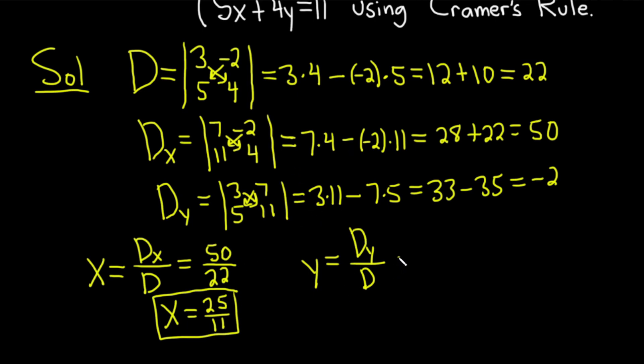And for y, big D sub y is negative 2. And then big D is 22. We get y equals. Again, we can divide the numerator and denominator by 2. So we get negative 1 over 11. And that would be the value of y. So as an ordered pair, the final answer is 25 over 11, comma, negative 1 over 11.